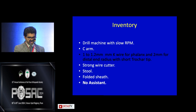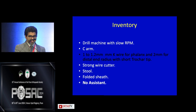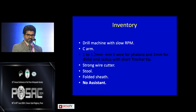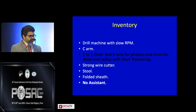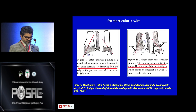What are the inventory requirements for the Kapanji K-wire? You need a drill machine with slow RPM, a 1 to 1.2 mm K-wire for phalanx and 2 mm for distal radius, with a short trocar tip. If you use a long trocar tip it walks through the distal cortex, so use a short trocar tip. You also need a strong K-wire cutter, a stool to sit on, a folded sheet, and no assistant is required.